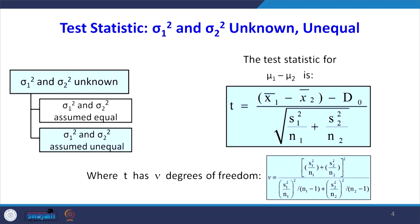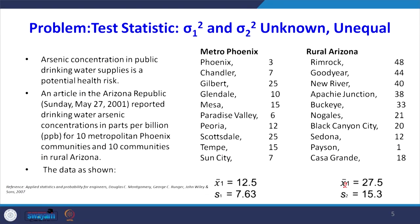In the previous problem we used Sp square by N1 plus Sp square by N2 where the variances are equal. But here the variances are unequal, so we cannot use Sp square in both places; we have to use S1 square and S2 square separately. The corresponding formula for degrees of freedom has already been explained.